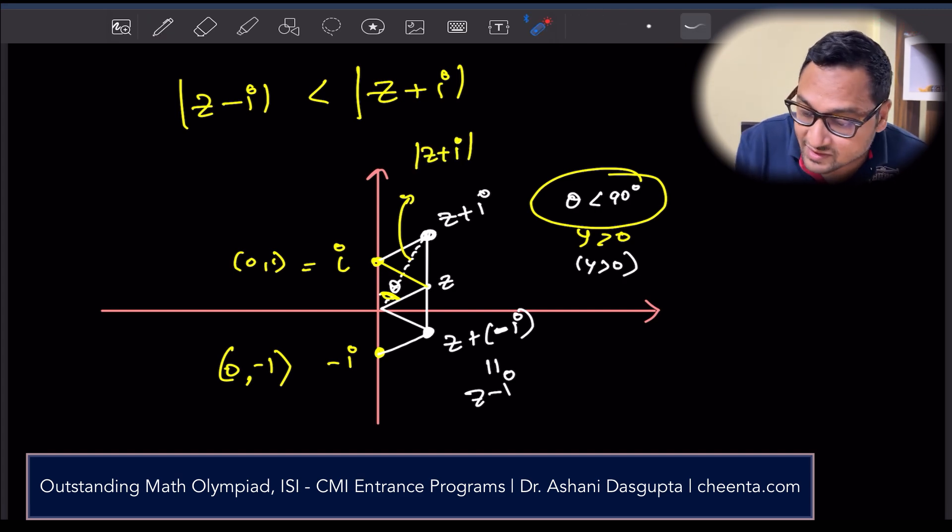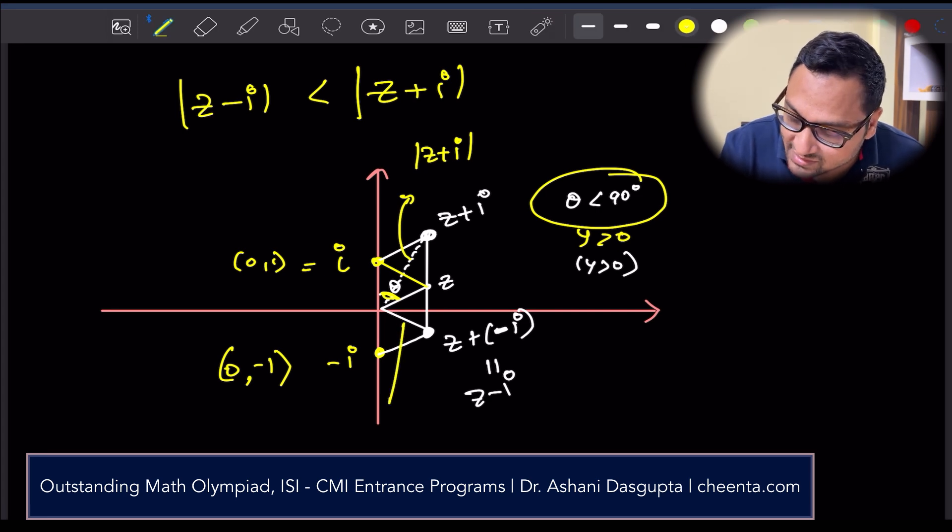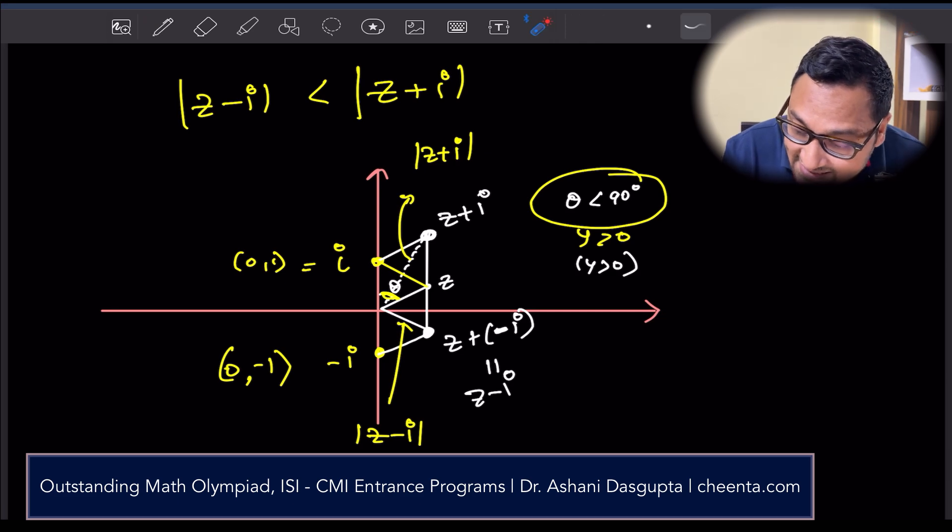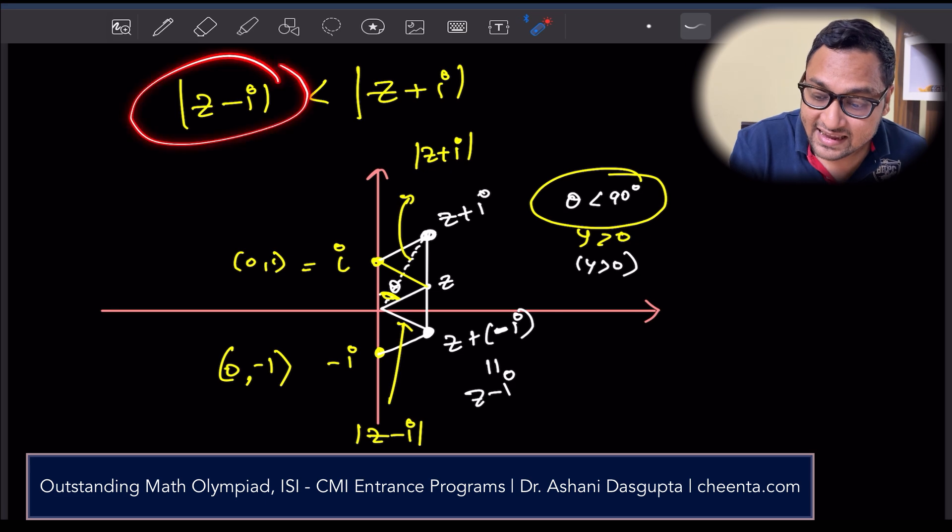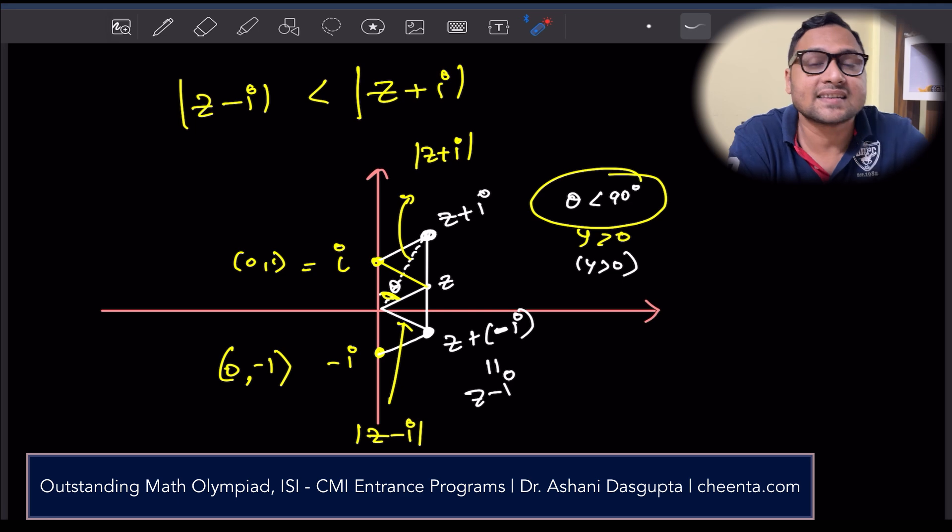This other length of the other diagonal, this one, this length is actually absolute value of z plus i, and this smaller diagonal which is opposite to theta is actually absolute value of z minus i because these two are parallel. This forms a parallelogram. The length of this one is absolute value of z minus i. When z is above the x-axis or y is greater than 0, absolute value of z minus i is smaller than the absolute value of z plus i. And there you go. The proof is complete.